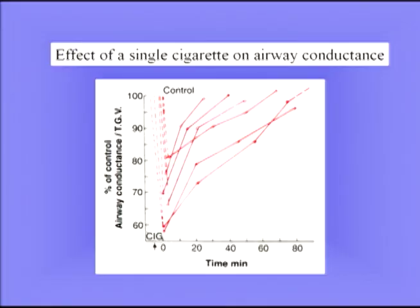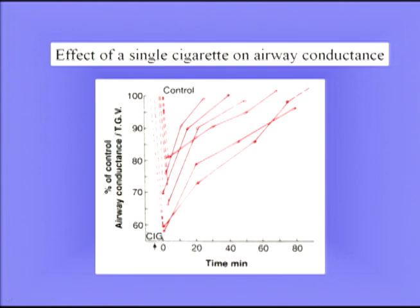What causes these changes in chronic bronchitis? It's the inhaled pollutants. To show the dramatic effects of inhaled smoke, consider the effect of a single cigarette on airway conductance — the reciprocal of resistance. After smoking a single cigarette, there is a tremendous reduction in airway conductance that lasts for an hour or so. This stuff is really toxic, and we should do everything we can to get rid of the terrible scourge of smoking.